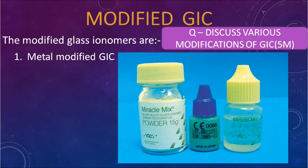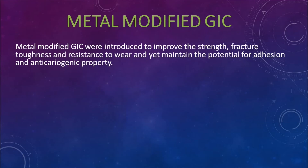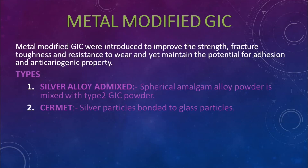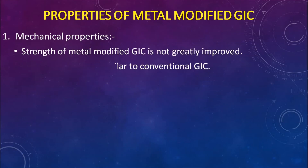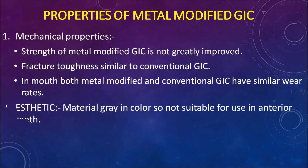Modifications of GIC — a question comes: discuss various modifications of GIC, including metal-modified GIC and resin-modified GIC. Metal-modified GIC: developed to improve strength, fracture toughness, and resistance to wear while maintaining adhesion and anticariogenic properties. Types — silver alloy admix: spherical amalgam alloy powder is mixed with Type 2 GIC powder; cermet: silver particles bonded to glass particles. Uses: core buildup for grossly destructed teeth; restoration of small Class 1 cavities as an alternative to amalgam or composite resin. Mechanical properties: improved strength; fracture toughness is similar to conventional GIC; in-mouth wear rate is same as conventional GIC. Color is grey, so not suitable for anterior teeth. It is anticariogenic.